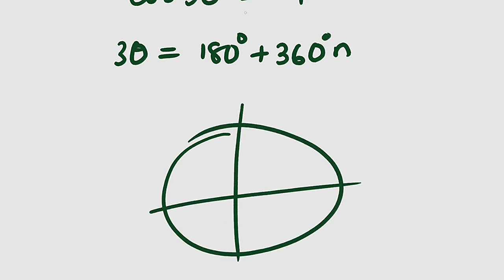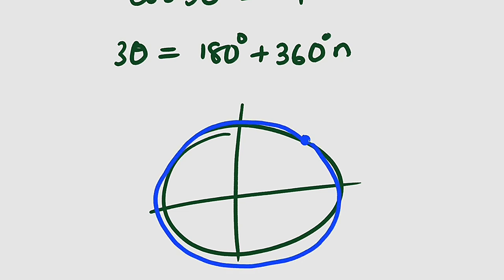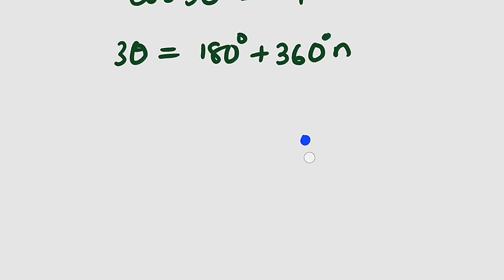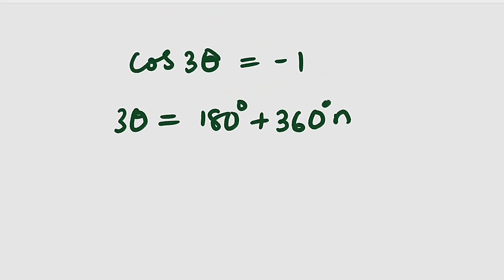Remember on the unit circle: if you have a solution and add 360 degrees, it returns to the same place — these are coterminal angles with the same ratios. This is why you add multiples of 360 degrees to get other solutions. Dividing both sides by 3: theta equals 180 divided by 3, which gives 60 degrees.